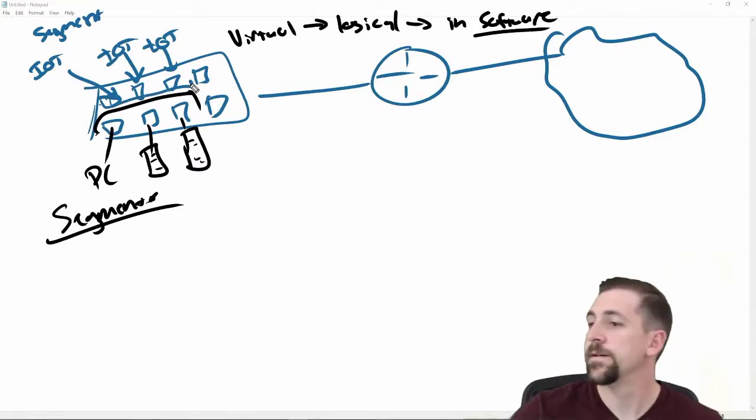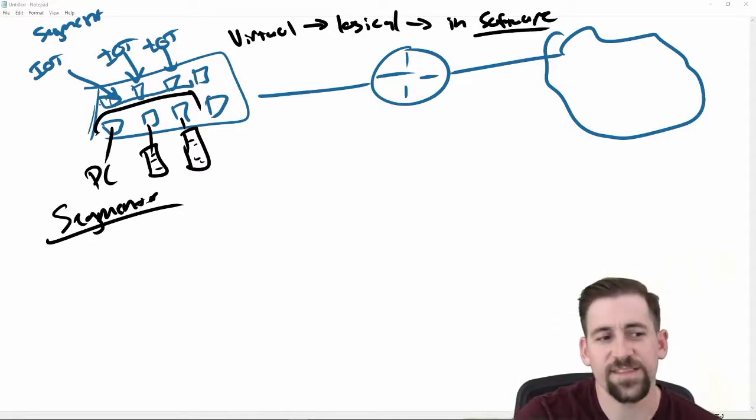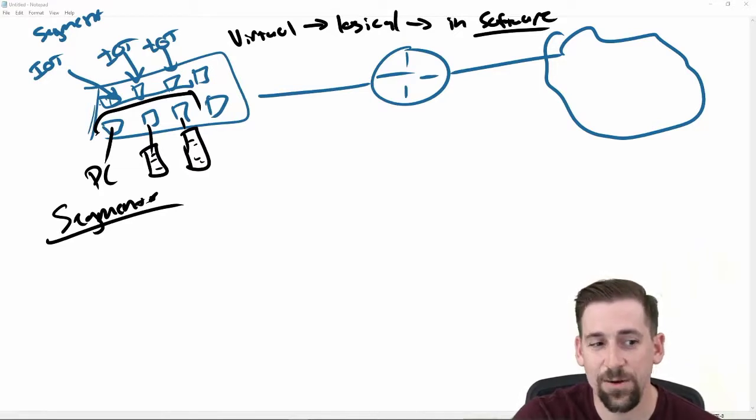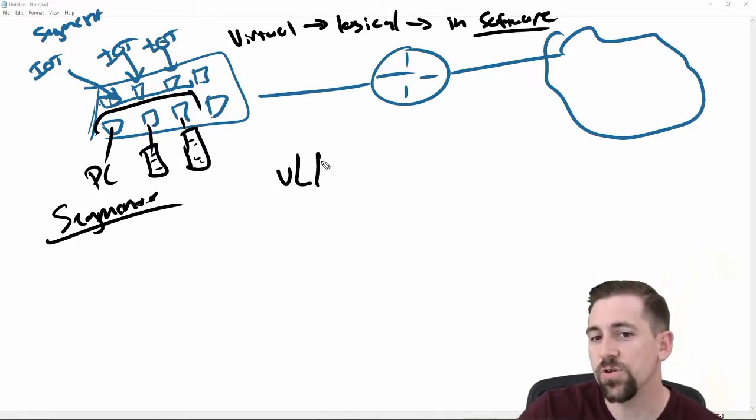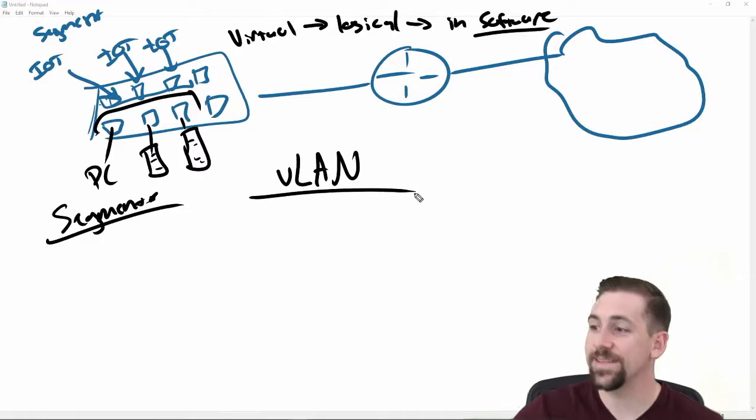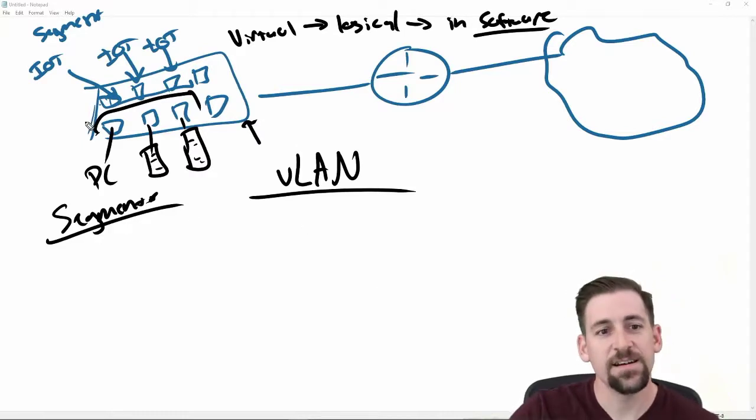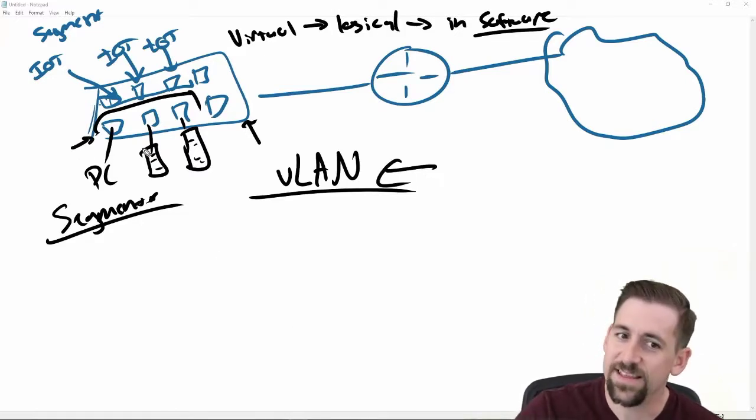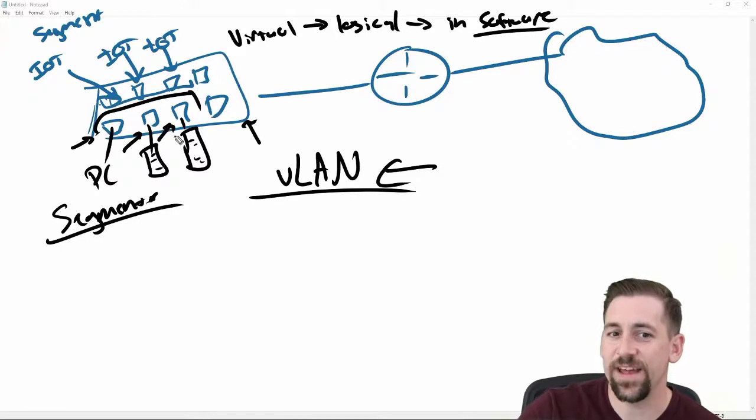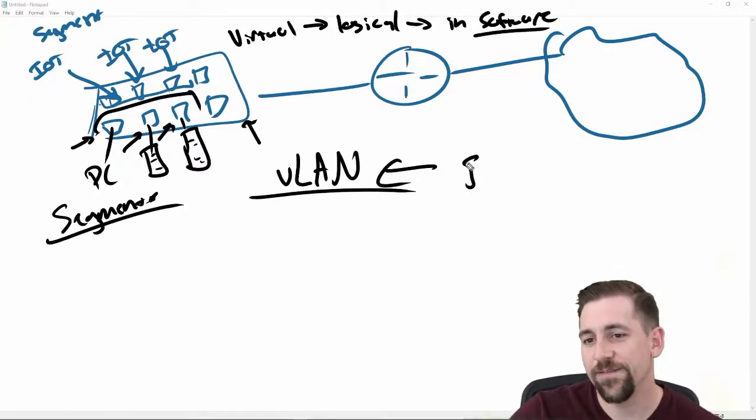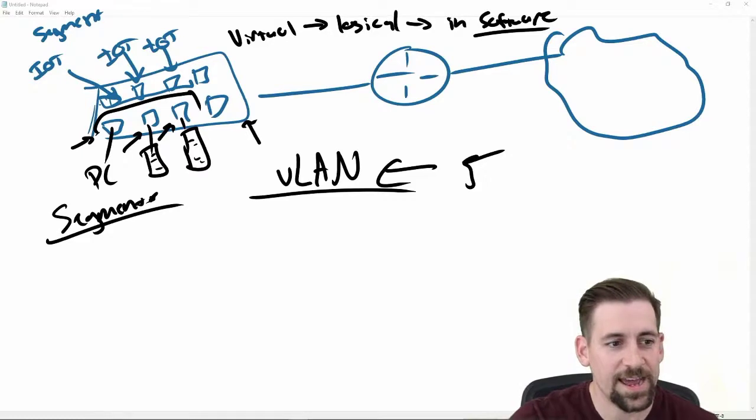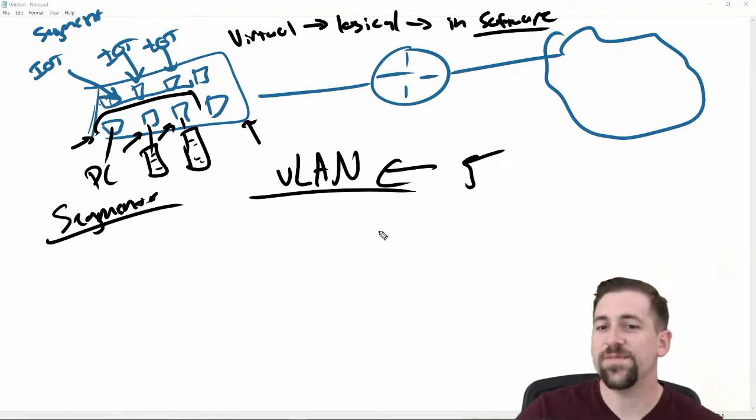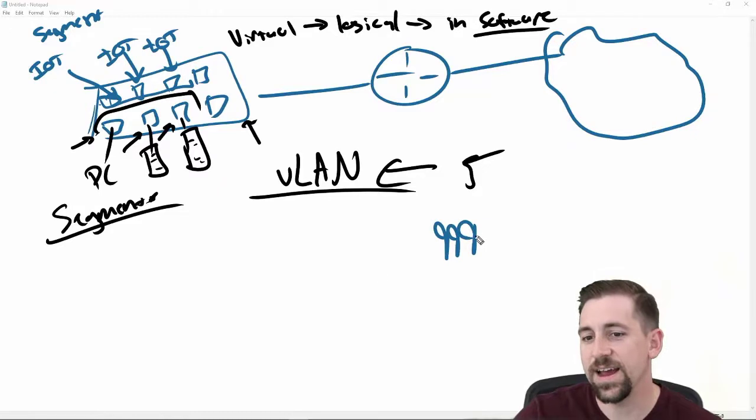Like this. And there's a term for this. These would be different local area networks at that point. So, they would be virtual local area networks or VLANs. And so, what I can do is I can configure multiple VLANs on this switch. Switches can segment the network using VLANs. And I can associate this PC, this server, and this server with VLAN 5. And I can associate my IoT VLAN with VLAN 999, let's say.